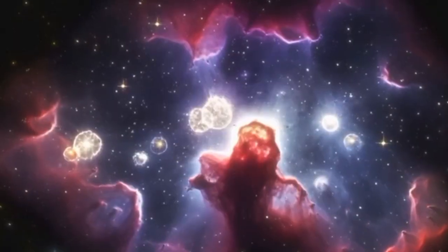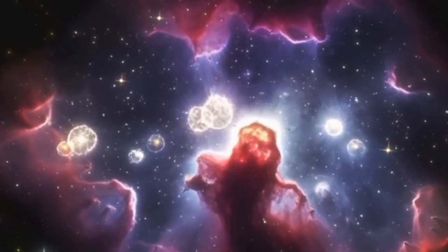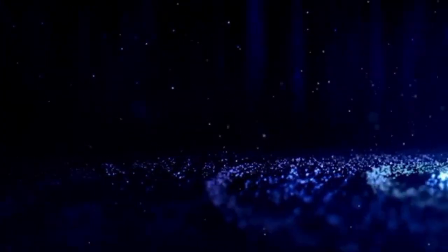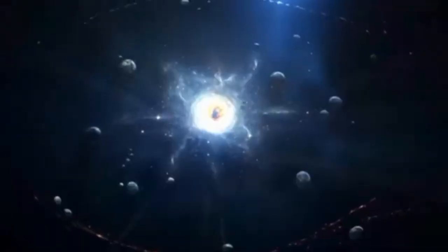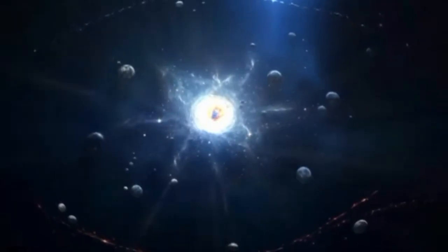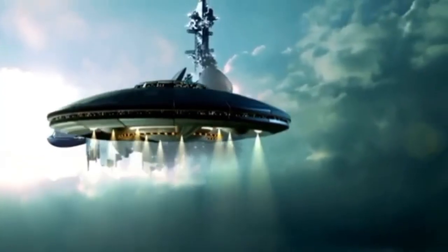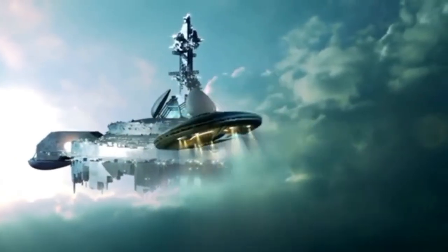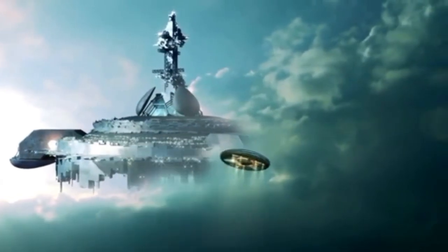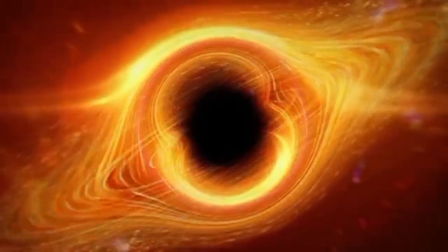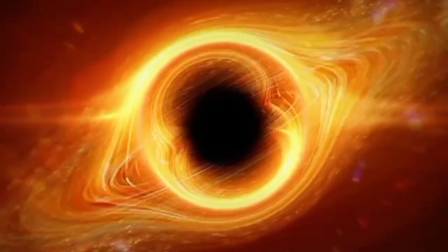As the James Webb Space Telescope makes us reconsider the timeline of the universe, forgotten theories have begun to resurface, one of them being the concept of a cyclic universe. This theory proposes that the universe hasn't simply existed for 13.8 billion years, but has gone through countless cycles of expansion and contraction, big bangs followed by big crunches. The ancient stars and Webb-observed galaxies may be the remains of an earlier cosmic cycle. And if so, what clues could they offer about the universe that came before ours?